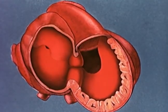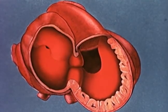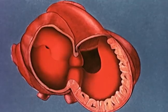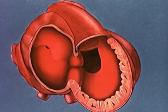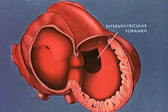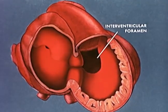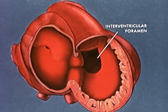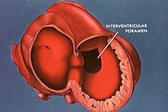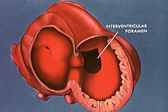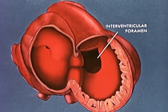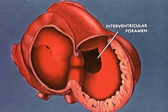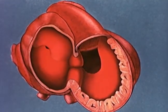An opening persists between the ventricular cavities. Closure of this interventricular foramen awaits the elaboration of a complex spiral septum, which splits the truncus arteriosus and conus region into the aorta and pulmonary artery.